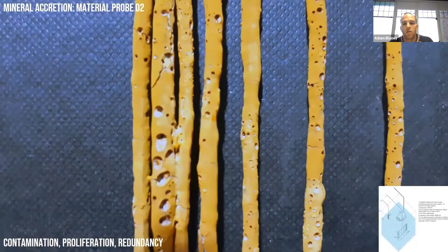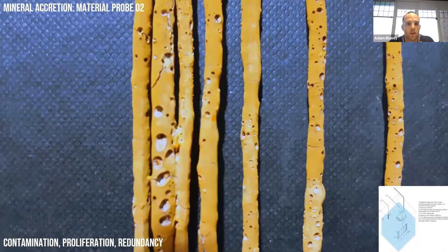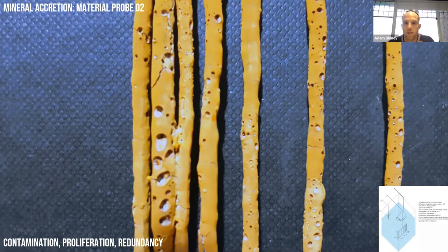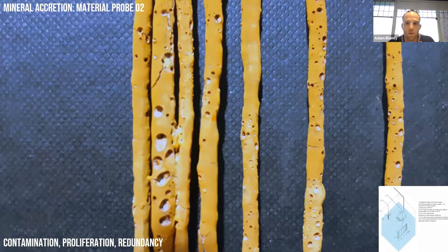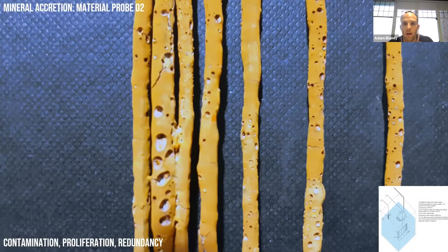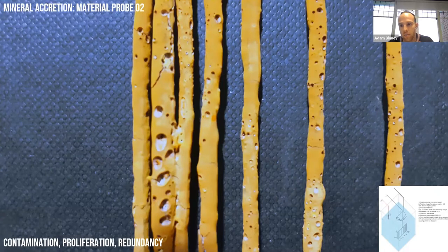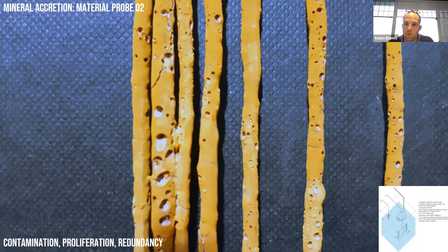A second iteration introduced turbulence and the material grew homogeneously as you can see on the second cathode, but there was this issue of contamination and the proliferation of this condition. When you get to threshold conditions in a solution, these conditions can proliferate and contaminate your structures. This highlights the need for introducing redundancy into the system.